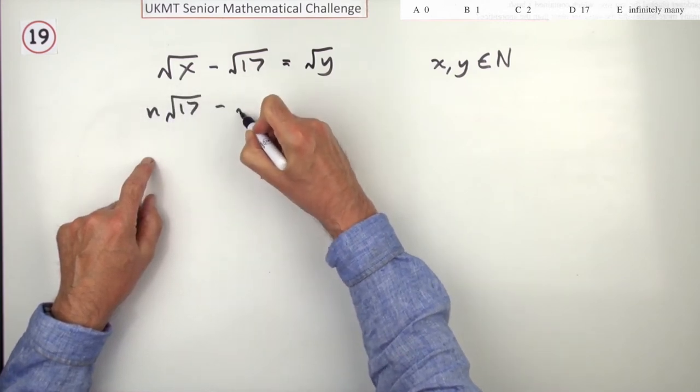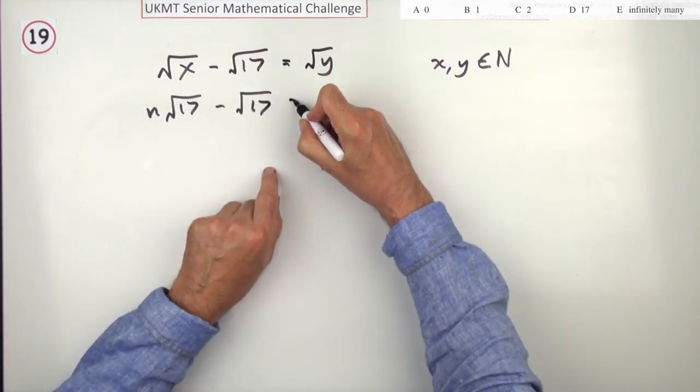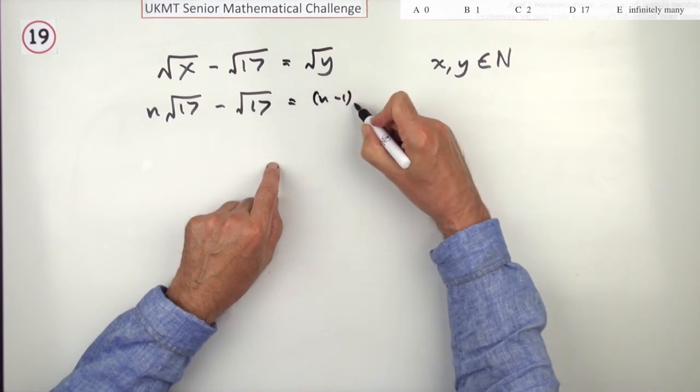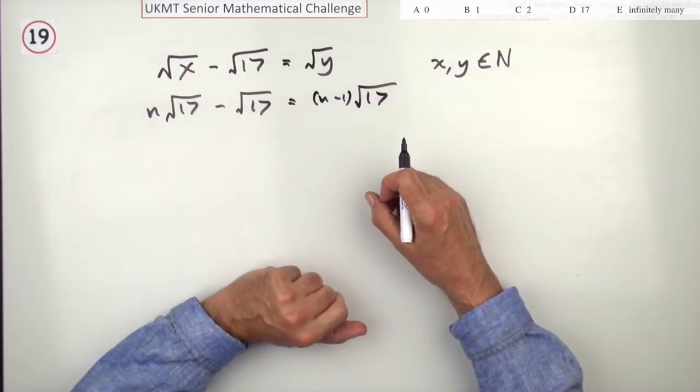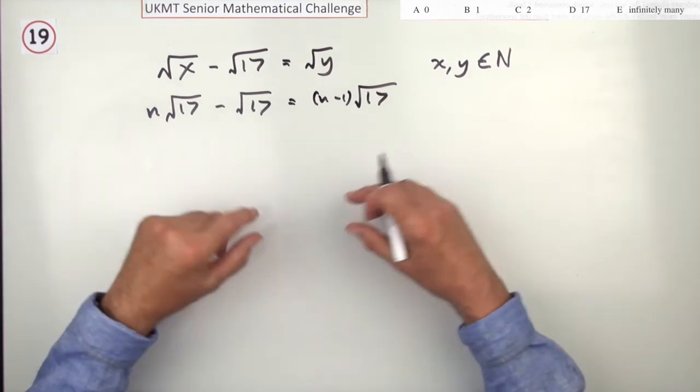If I've got some number of √17s, and I take away a √17, I'll just have one less lot of √17. Now, of course, that isn't x and y, but that in itself will just tell you it's infinite.